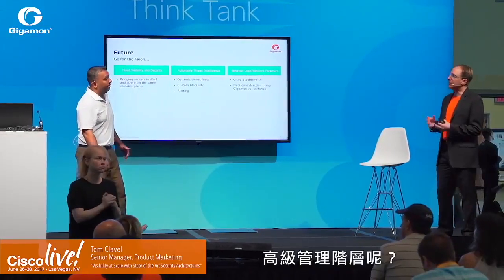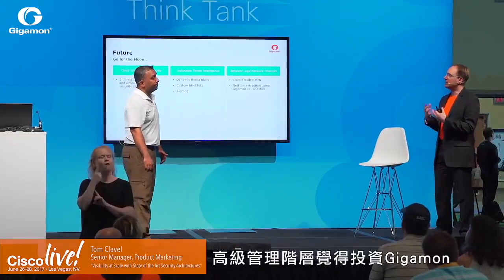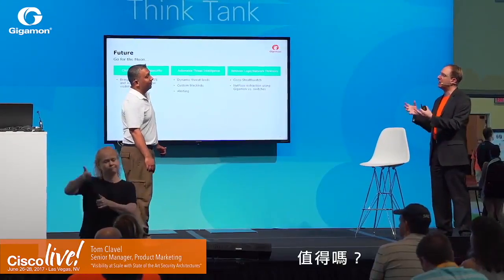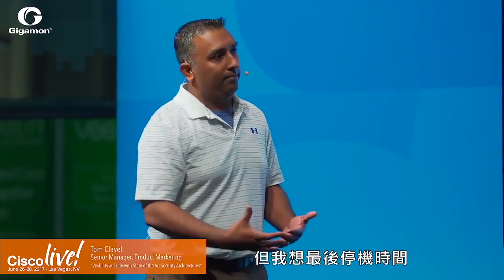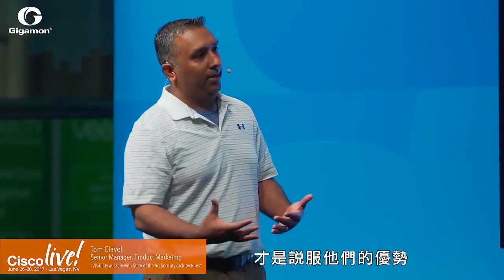When asked how Gigamon changed the team's reality and what convinced senior management: it was a tough sell, but showing the visibility portion wasn't enough — what sold it was the amount of downtime reduction. They made the case that inline tools would be needed, and placing Gigamon in the middle would reduce the downtime when taking tools down for servicing. That was the big clincher, the big winner.